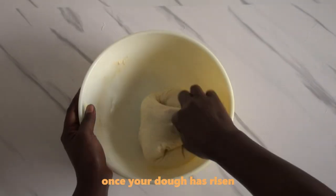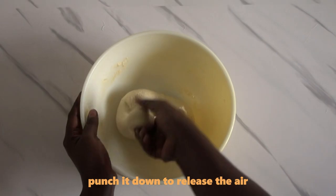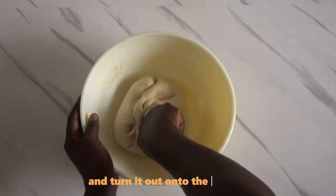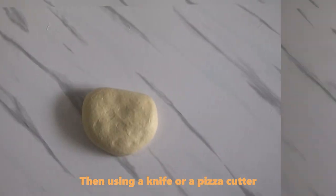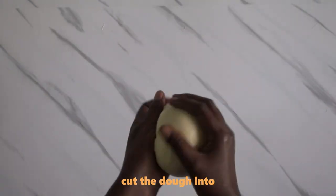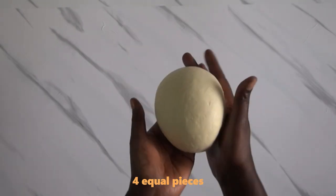Once your dough has risen, punch it down to release the air and turn it out onto the surface. Then using a knife or a pizza cutter, cut the dough into four equal pieces.